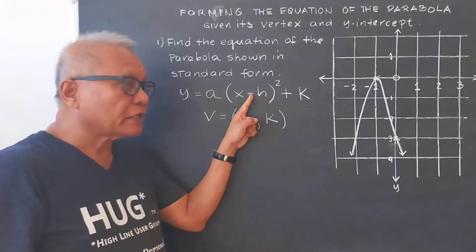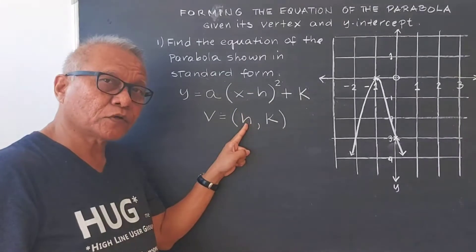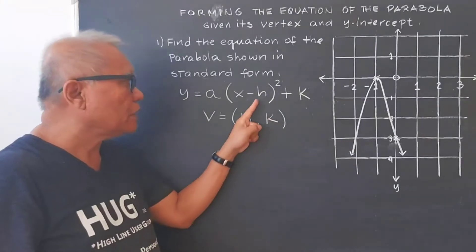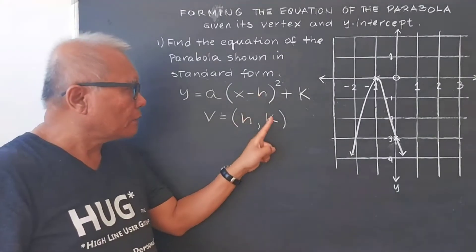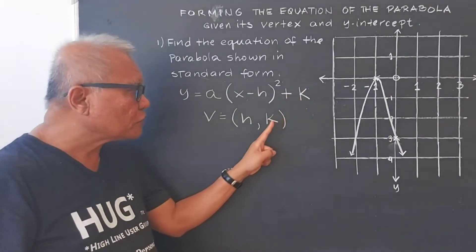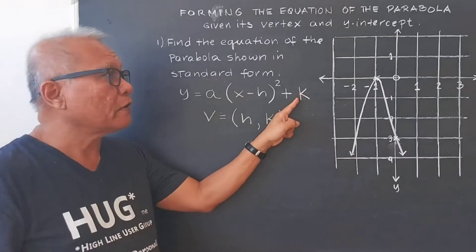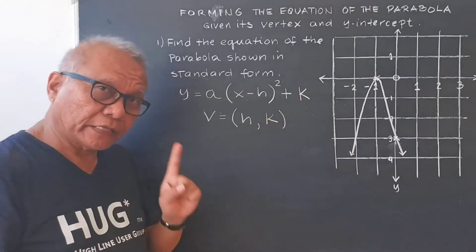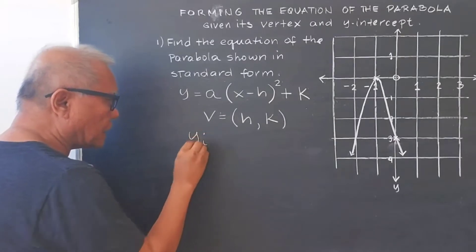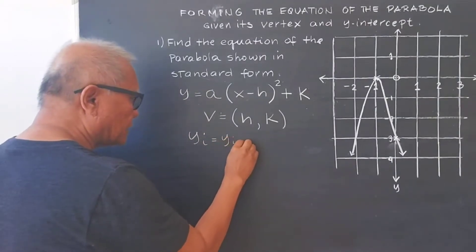Remember, this one is negative, meaning that if our h is positive, it will be negative there in the formula. If this one is negative, it will be positive there. But for k, if this one is positive, that is positive there; if this one is negative, then it is also negative there in our formula. And then the y-intercept.